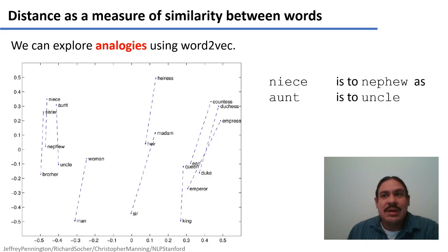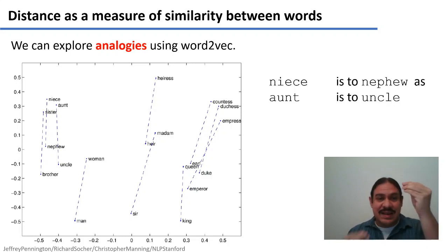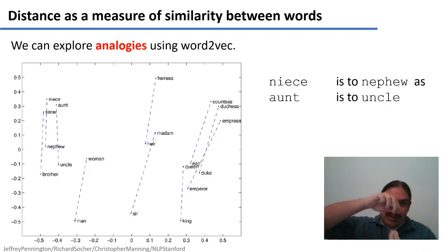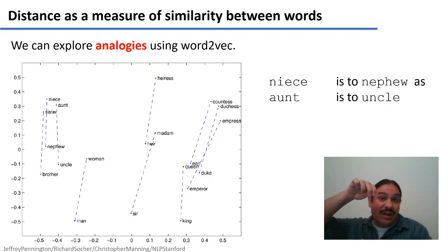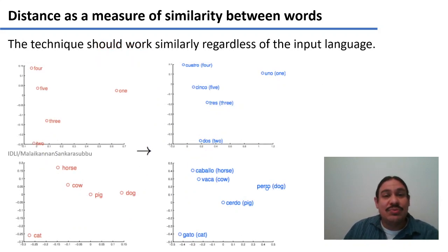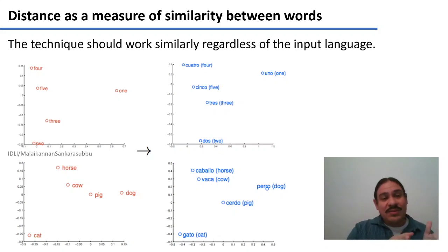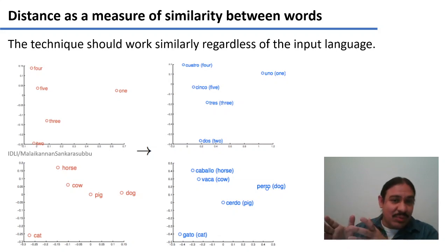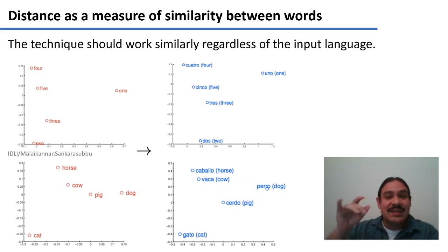This will apply to many sets of words. For example, with human words, we have gendered pairs — words like niece and nephew — and they're going to have the same similarity as other pairs, like aunt and uncle. This technique should work regardless of the input language. If we provide enough input, the computer will be able to calculate word2vec vectors. On the left, we have an English example with numbers and domesticated animals, and we have the same words for Spanish on the right. The spatial distributions are roughly the same, and particularly the similarities between words are roughly the same between languages.